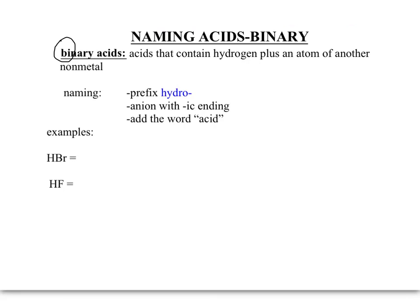When we name binary acids, we're going to use the prefix 'hydro' — think hydrogen. Then our anion, our non-metal, gets an '-ic' ending instead of an '-ide' ending. And then we always add the word 'acid.'